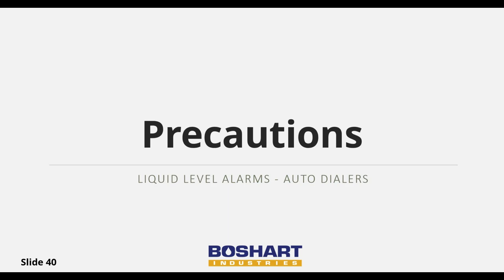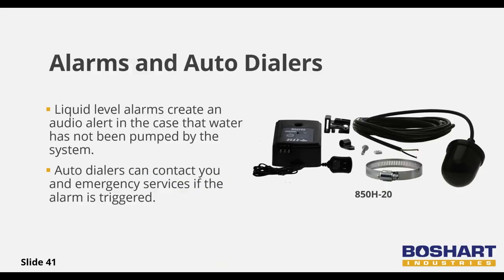There are several precautions that can be taken so that, in the unlikely event of an issue with the system, you can be proactive before any damage is done. Liquid level alarms and auto dialers are a great way to get notified of an emergency if a water or wastewater system is not working properly. The liquid level alarms create an audible alert if triggered and have the ability to add more sensors and alert beacons. Auto dialers can be linked with several numbers that will get notified if triggered.